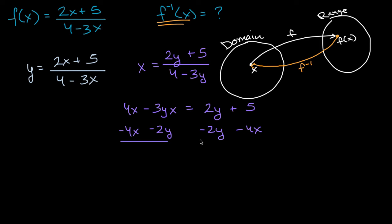And then what are we going to be left with? On the left hand side, we're left with negative three y x minus two y. And you might say, hey, where is this going? But I'll show you in a second. Is equal to, those cancel out, and we're going to have five minus four x.